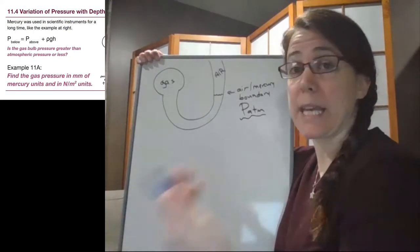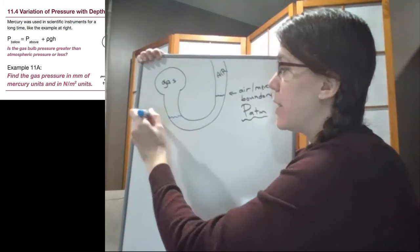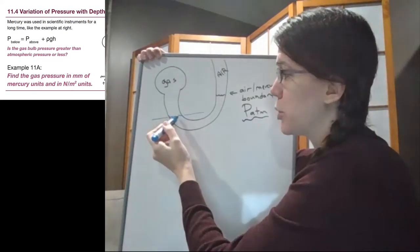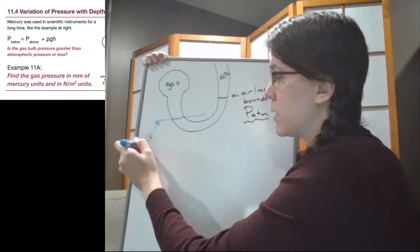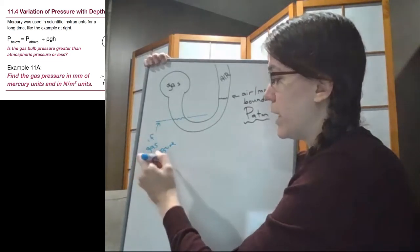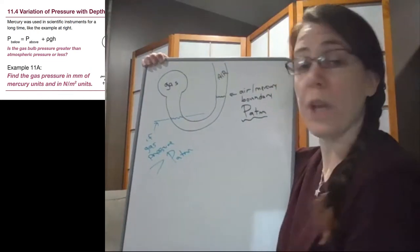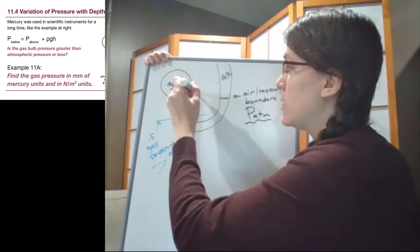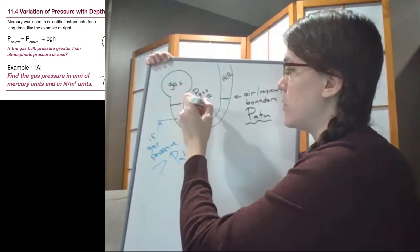If we had a gas that was at extremely high pressure, it would be pushing all the mercury down, and the level of the gas-mercury boundary on the left would be below the air. That would be if the gas pressure is greater than atmospheric pressure. We could have a situation where it's even on both sides. In that case, the gas pressure is the same, is equal to the atmospheric pressure.